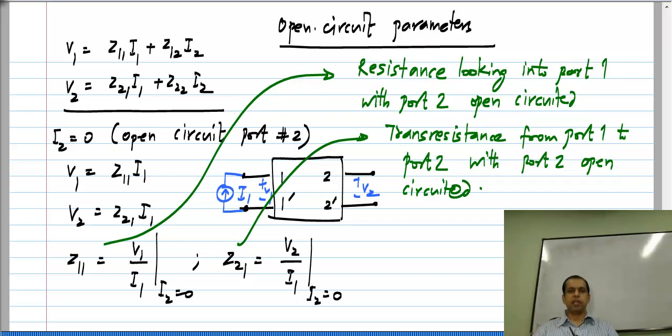The principles are exactly the same as with Y parameters, so I'll go quickly through the remaining parameters. In case of Y parameters, we short-circuited one port and measured two parameters, then short-circuited the first port and measured the other two. Here, instead of short-circuiting, we are open-circuiting, because the independent variables are currents. We set current to zero, which means a port becomes an open circuit.